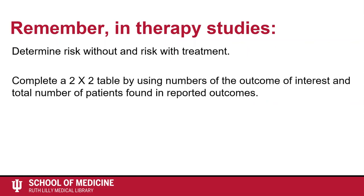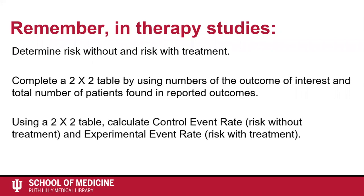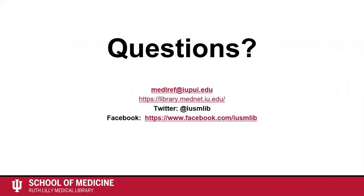To do that, complete a two-by-two table using numbers of the outcome of interest and total patients found in the reported outcomes of a study. Using the two-by-two table, calculate the control event rate (risk without treatment) and the experimental event rate (risk with treatment). Thank you for watching this short video on determining risk in a therapy study. Questions? Feel free to contact us at the Ruth Lilly Medical Library. Be sure to also check out our other videos and tutorials available through the library website.